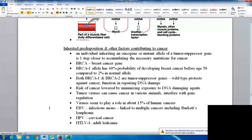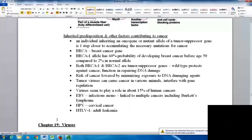The risk of cancer is lower by minimizing exposure to DNA damaging agents, though some things are easier to do than others. Tumor viruses can cause cancer in various animals by interfering with gene regulation. Viruses seem to play a role in about 15% of human cancers. One example is EBV, the Epstein-Barr virus, which causes infectious mono and is linked to multiple cancers including Burkitt's lymphoma, which has pretty high prevalence in the population.